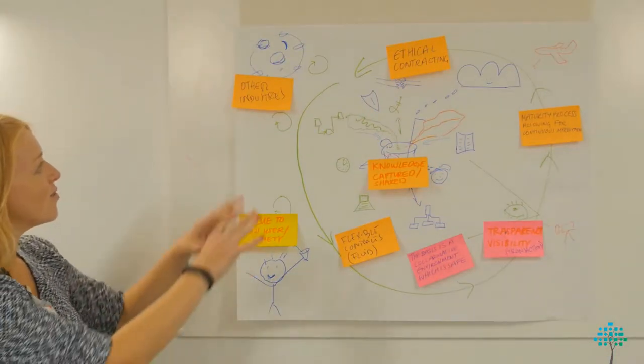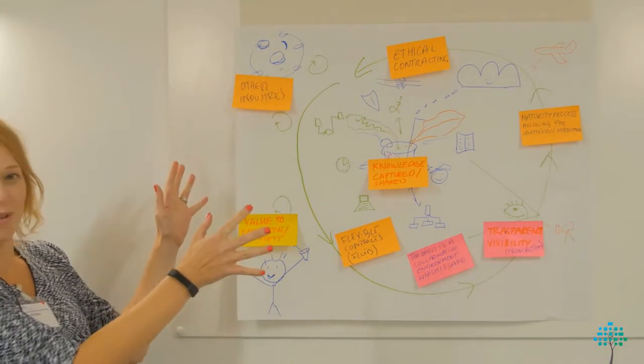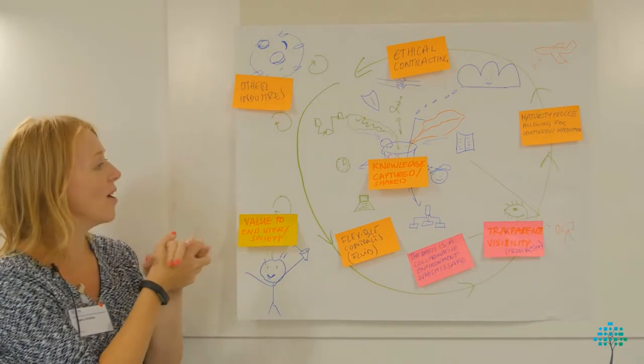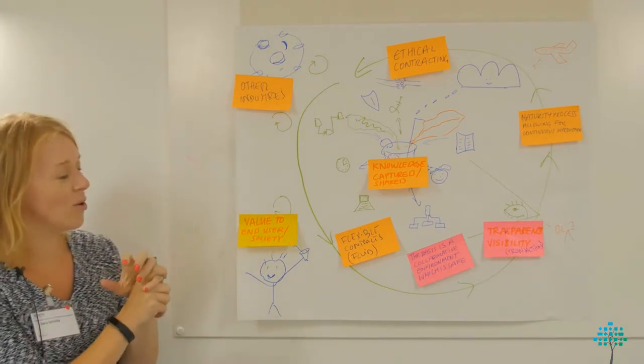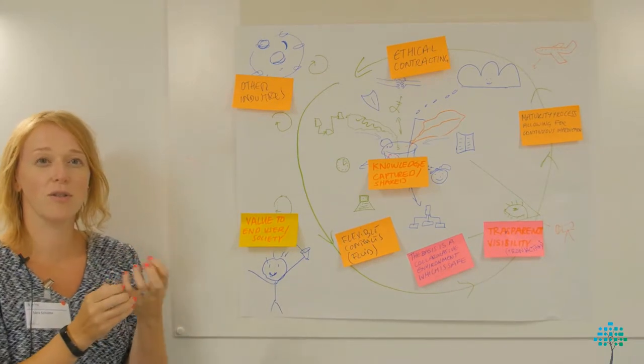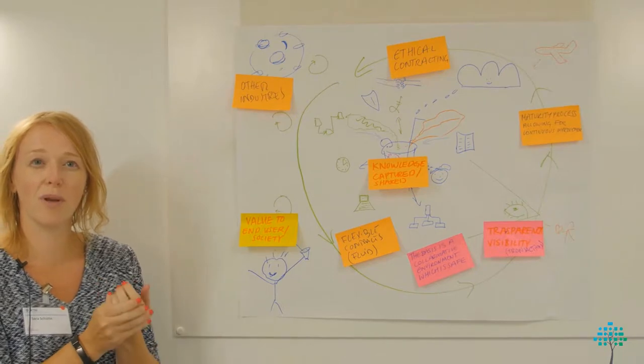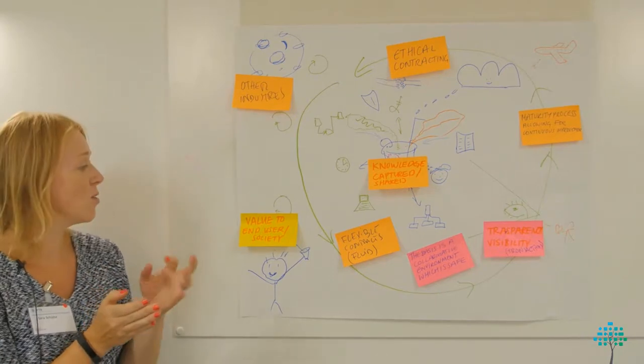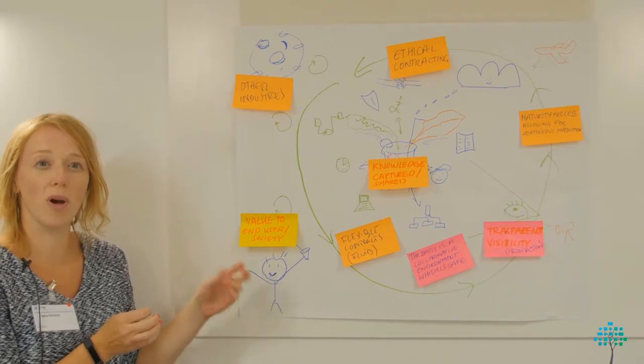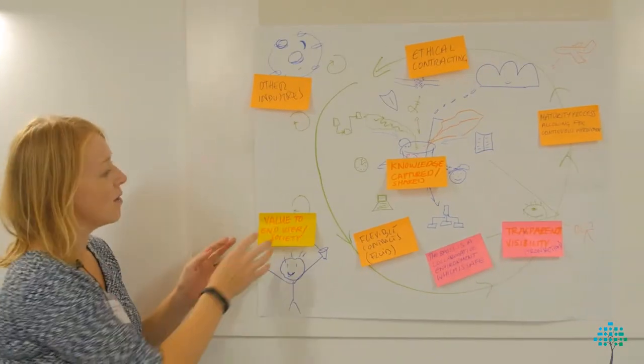This is our mood board of ideas as to what the perfect project looks like. Our starting point was actually the end, and the end is this: value to the end user, including societal benefits, economic benefits to the wider community, as well as the end occupier and owner. To get to the end, we have to start here—the basis of the project has to be a collaborative environment.